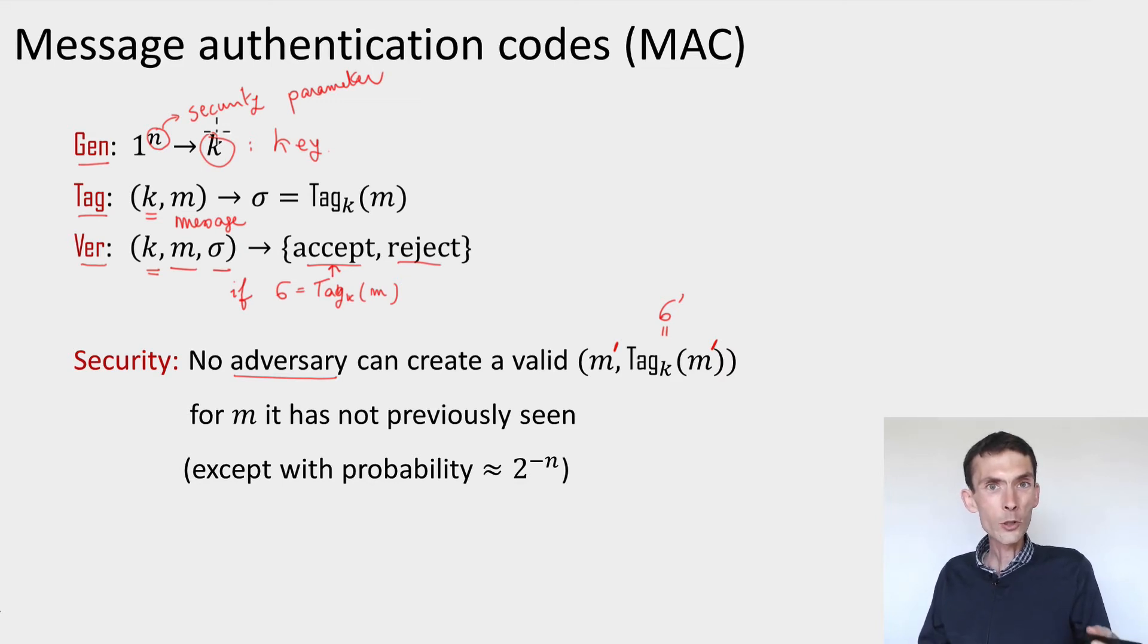So the use, the assumption that they have access to an authenticated channel actually requires them to share a key a priori. And so the question is, how long does the key that they need need to be in order to implement the message authentication code? So let's see one simple construction of a MAC.